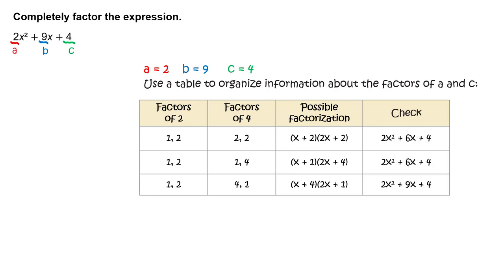To check which possible factorization is the correct one, multiply. The factorization (x + 4)(2x + 1) is the correct one, because it multiplies to 2x squared plus 9x plus 4, which is the original expression.